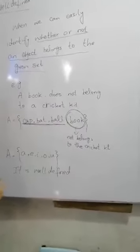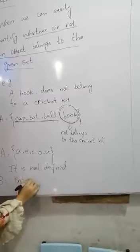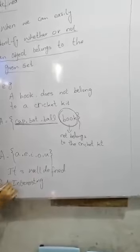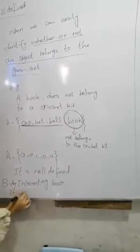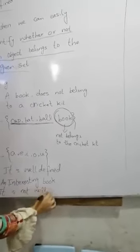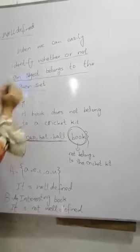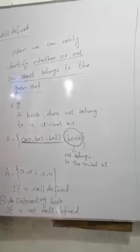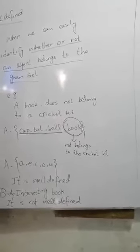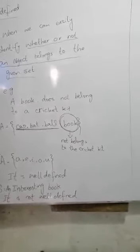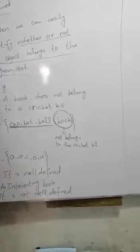One more example: the set of interesting books. This set is not well-defined. Why? Because one person may agree that a book is interesting, while another person may not agree. So it is not properly well-defined.